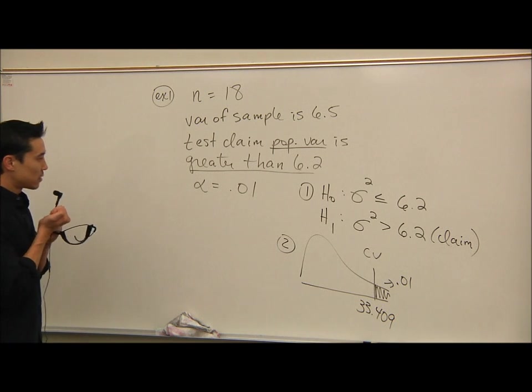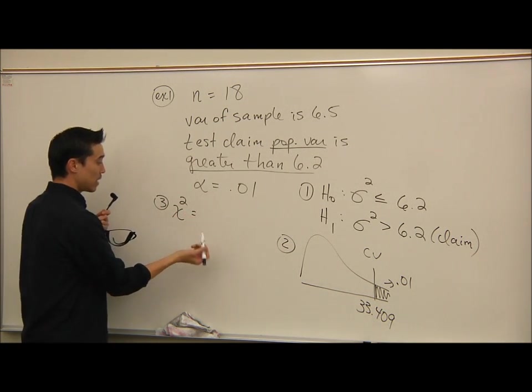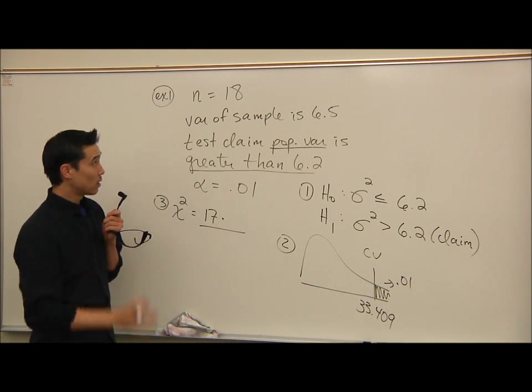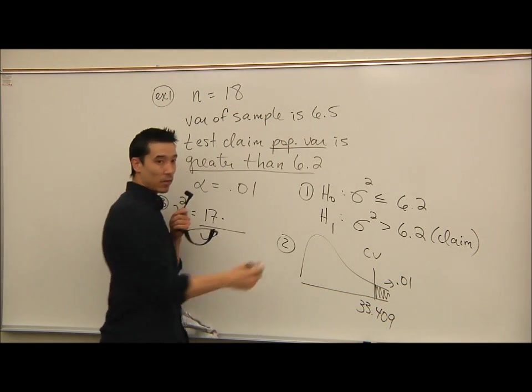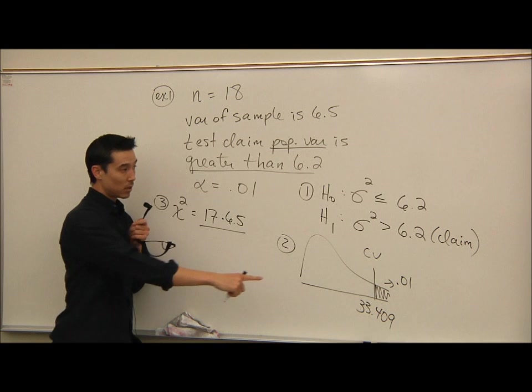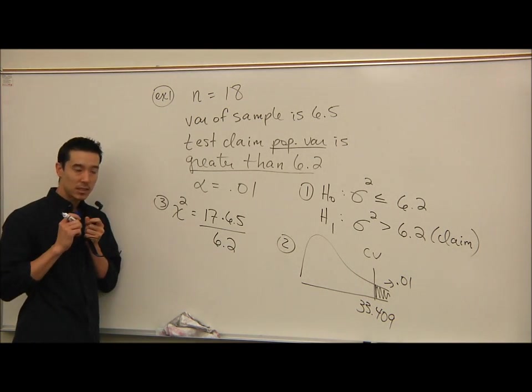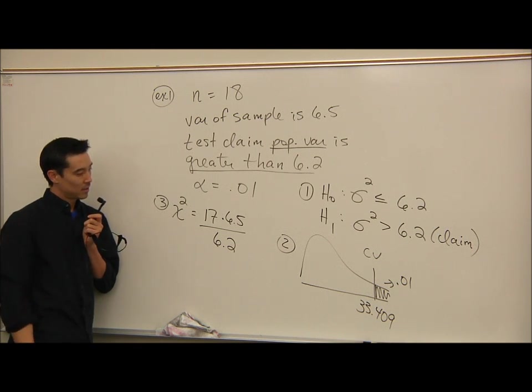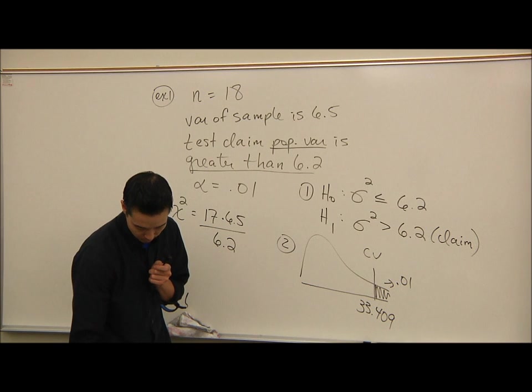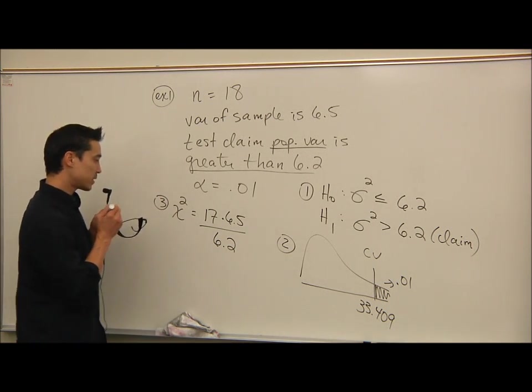So write down the test value formula. We're on step three now. Chi-squared equals n minus 1, so 17. And then we have to be careful. In my formula, it's s-squared. It says in the problem the variance of the sample is 6.5. Well, that is s-squared, right? So I don't have to square that, so just put 6.5. And then on the bottom, it says the hypothesized sigma-squared, which was sitting over here. Our hypothesized sigma-squared is 6.2. So this test value formula is pretty easy. Just 17 times 6.5 divided by 6.2. So that one shouldn't be too bad in your calculator. And I'm getting about 17.8226. Approximately 17.8226.